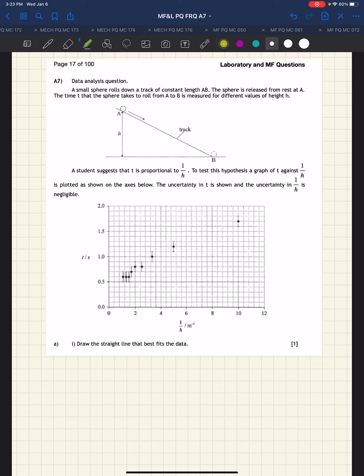Question A7. We're told that there's a small sphere that rolls down a track of constant length AB. There is the small sphere at the top of A and ending up at B. It's released from A, ends up at B, and what's measured is the time.